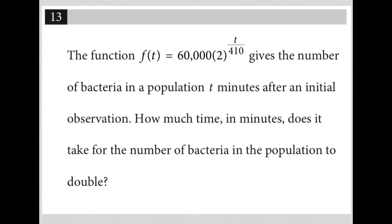This question says the function f(t) = 60,000(2)^(t/410) gives the number of bacteria in a population t minutes after an initial observation. How much time in minutes does it take for the number of bacteria in the population to double?